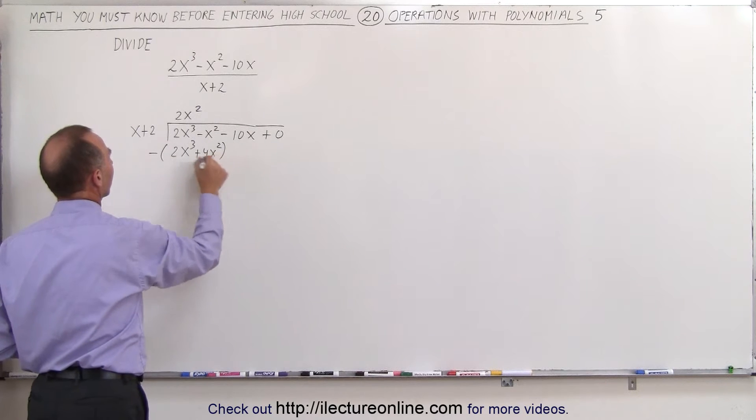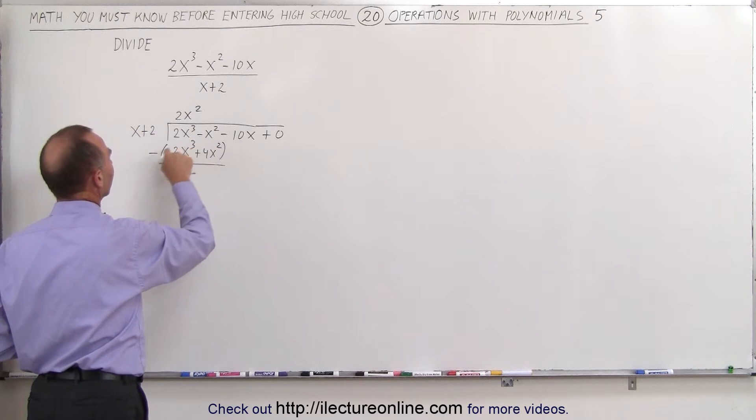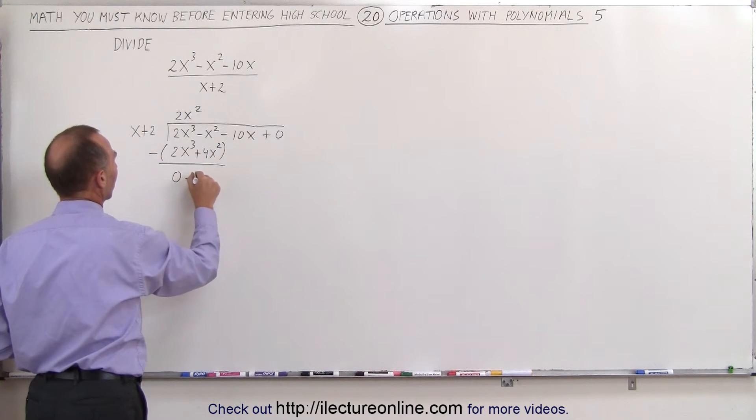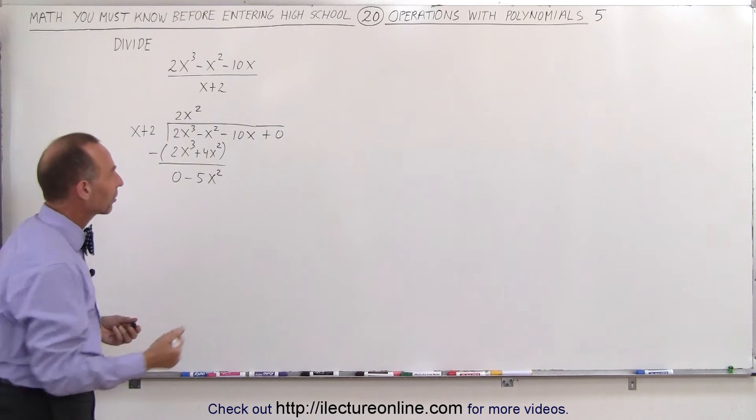Now we subtract this from what's above there, so this subtracted from that gives us zero, and this subtracted from that gives us -4x² plus -x² or -5x². So now we drop down the next term, -10x.